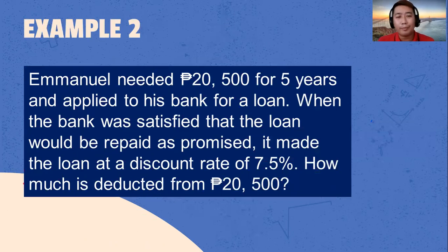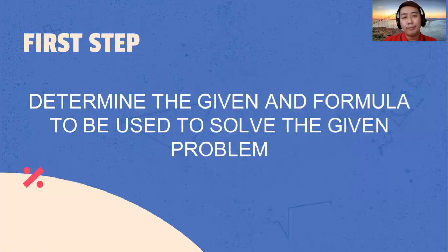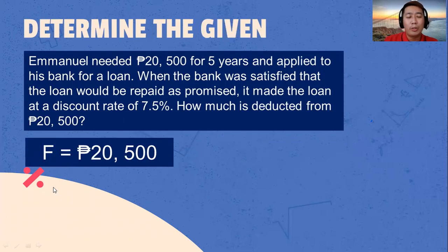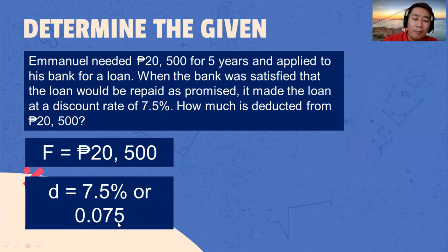Let's have another example. Emmanuel needed 20,500 pesos for 5 years and applied to his bank for a loan. When the bank was satisfied that the loan would be repaid as promised, it made the loan at a discount rate of 7.5%. How much is deducted from 20,500? The maturity value is 20,500. The discount rate is 7.5%, or 0.075 — divide 7.5 by 100 to get the decimal value.